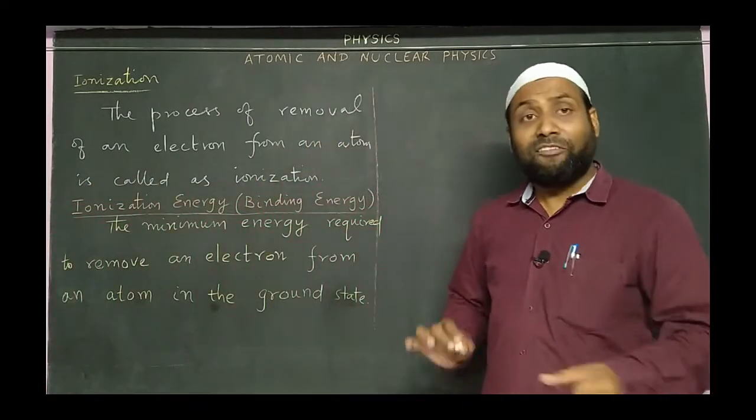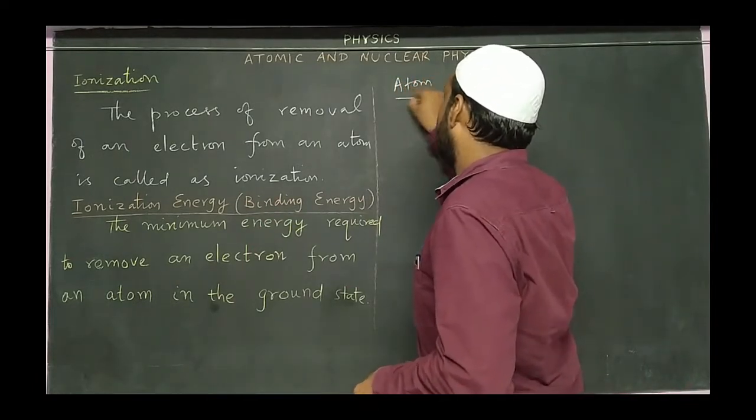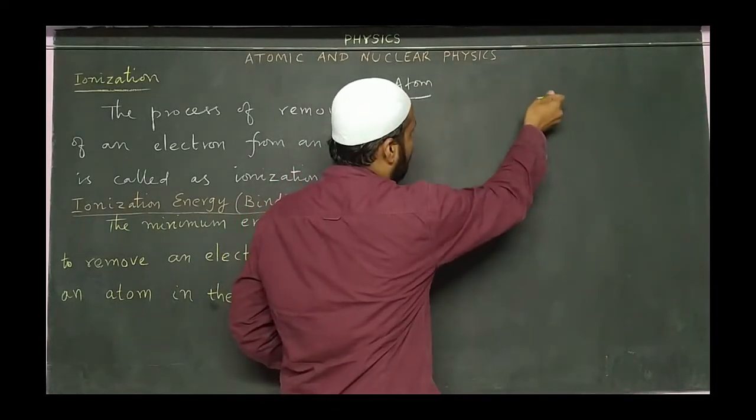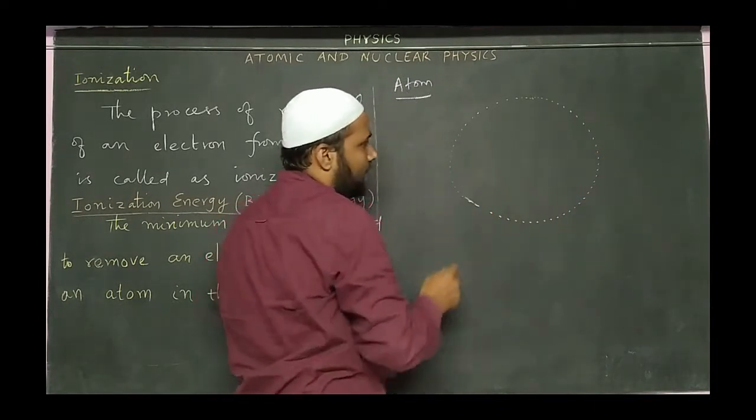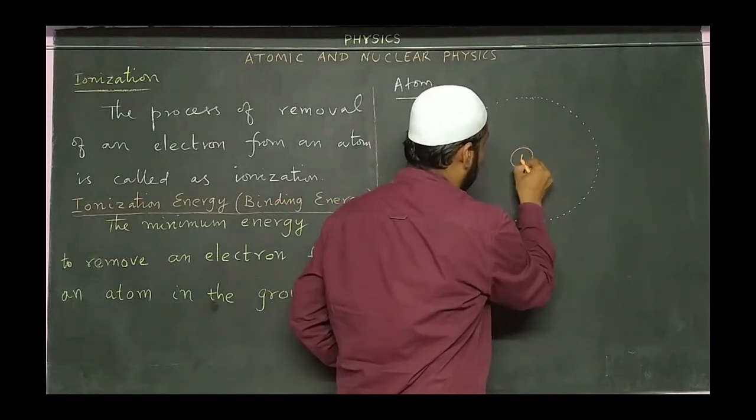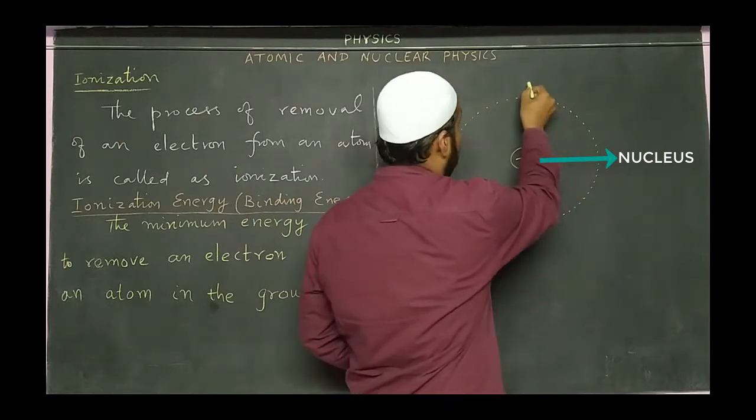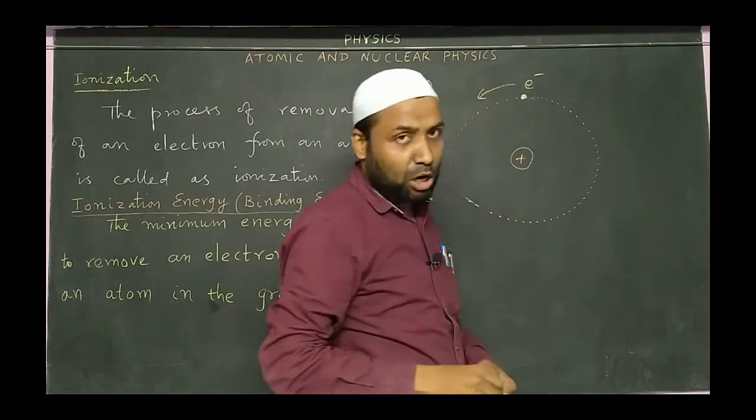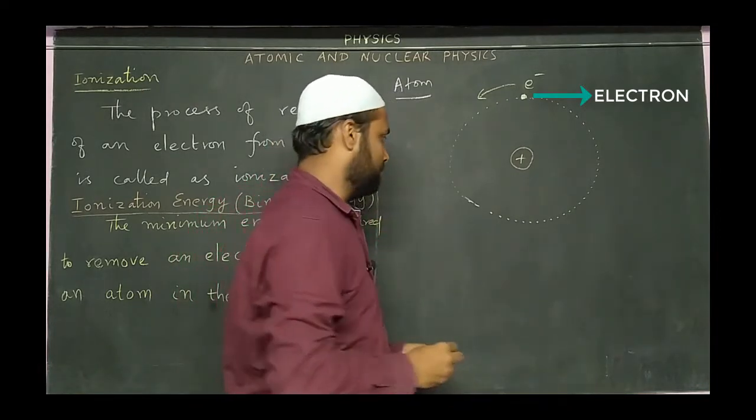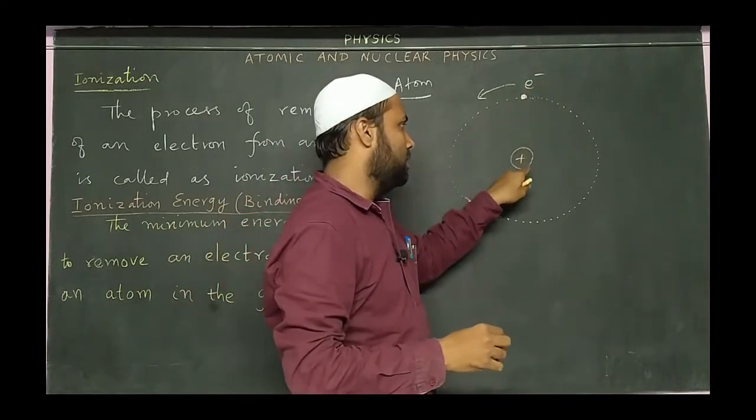We know almost everything in the universe is made of atoms. When you look at the diagram of an atom, it consists of electrons revolving around a nucleus, a positively charged nucleus. Here, these electrons are negatively charged and revolve in the anti-clockwise direction. Atoms have equal number of electrons and protons.